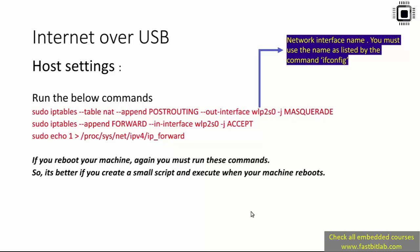It's better if you create a small script and execute it when your machine reboots. I have attached a script with this lecture — just download usbnet.sh, keep it in your home directory, and run it. It will enable internet sharing. Basically that script contains all these commands.